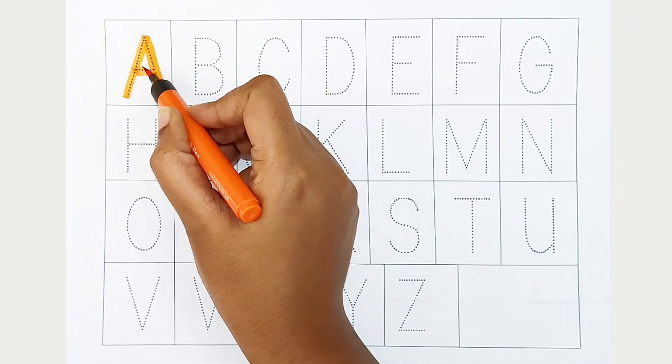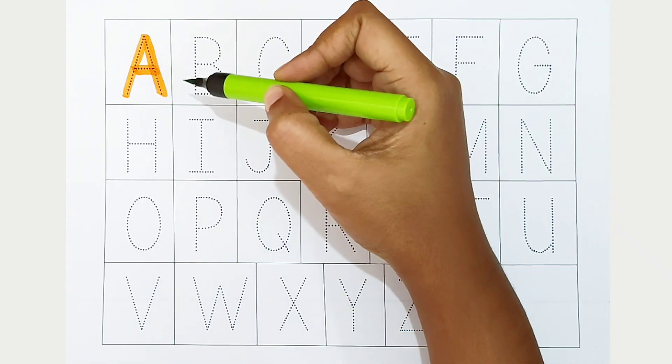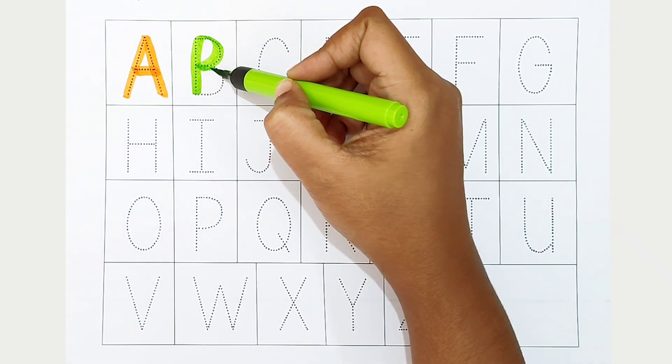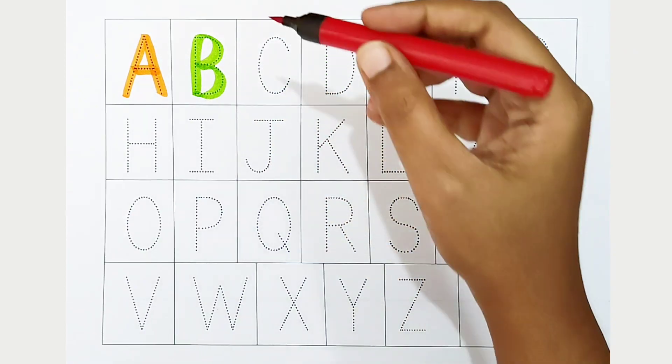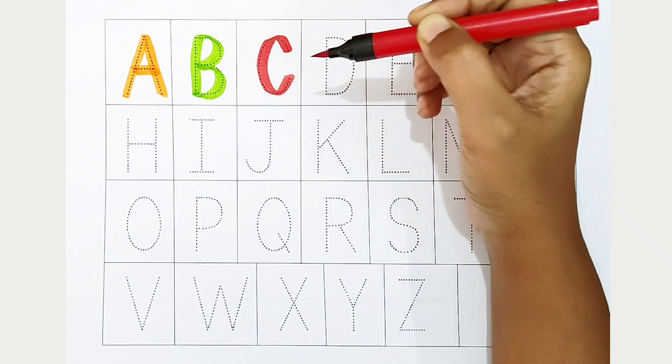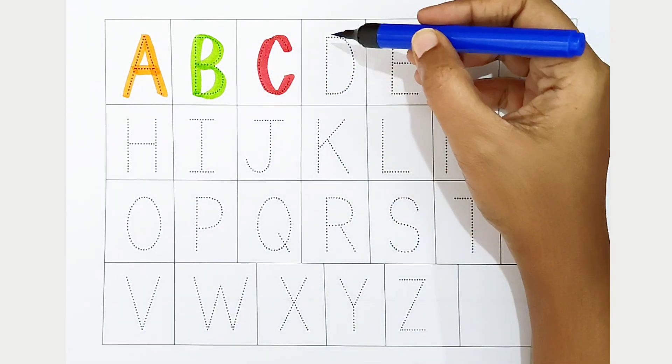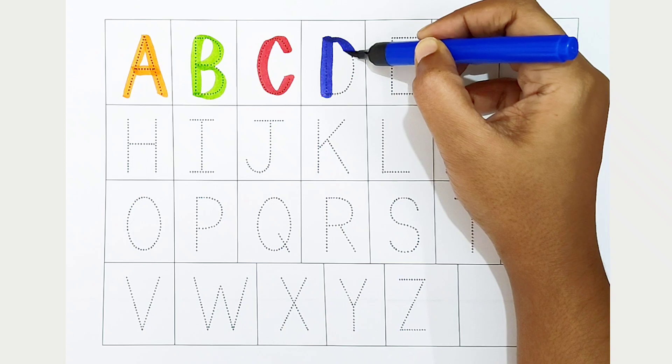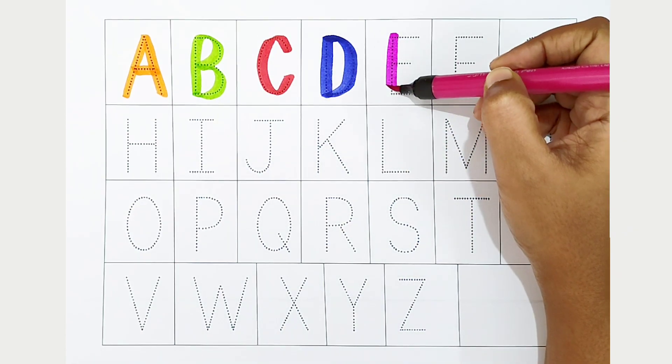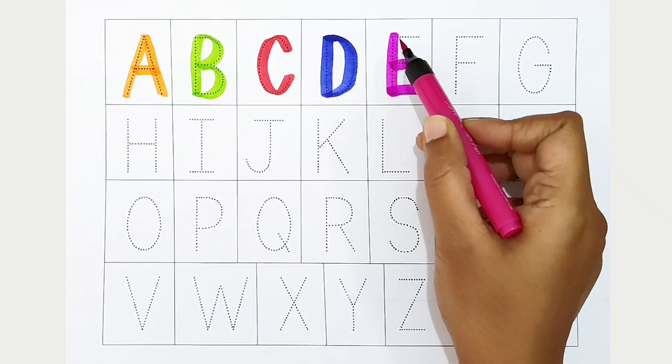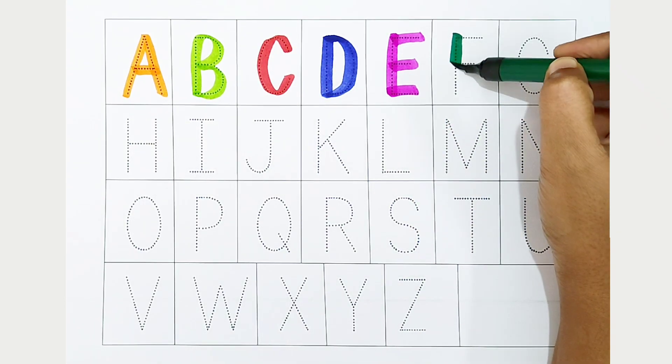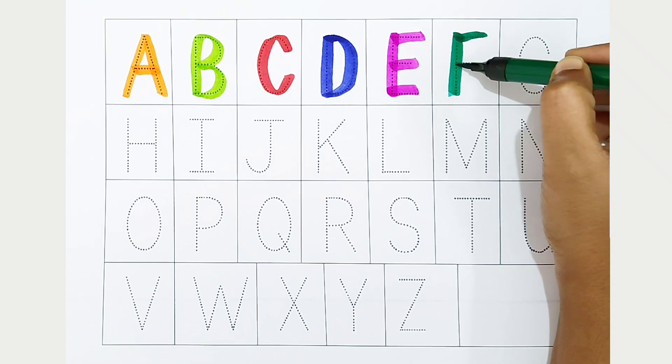B, light green color. B is for bat. C, red color. C is for caterpillar. D, dark blue color. D is for donkey. E, dark pink color. E is for eggplant. F, dark green color. F is for fan.